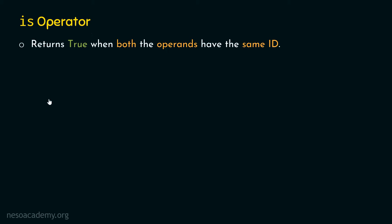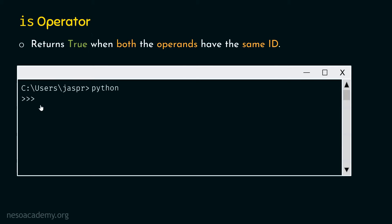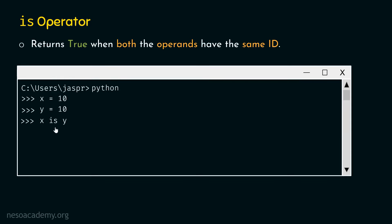For example, let's open our command prompt and activate the Python interactive shell. Let's type x equal to 10, hit enter, and type y equal to 10. Then we type x is y. With the `is` operator, we are asking: is the ID of the object pointed by x the same as the ID of the object pointed by y?